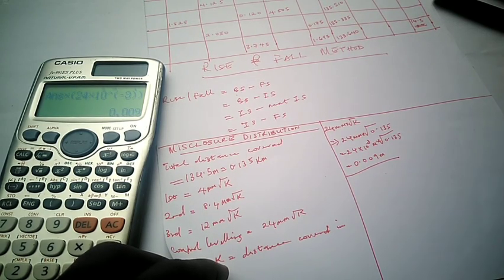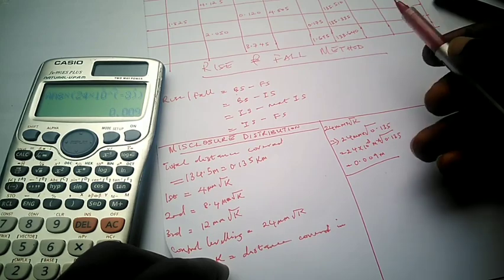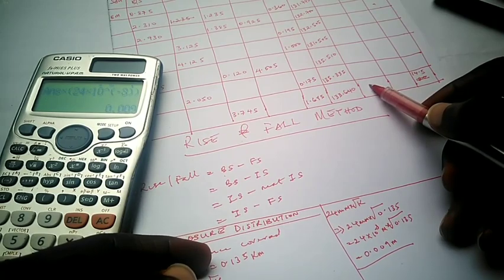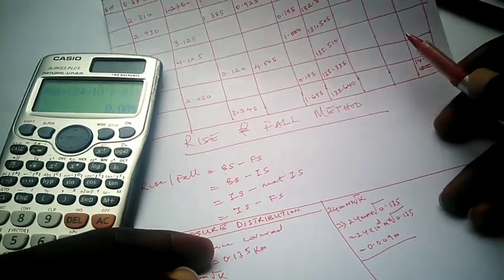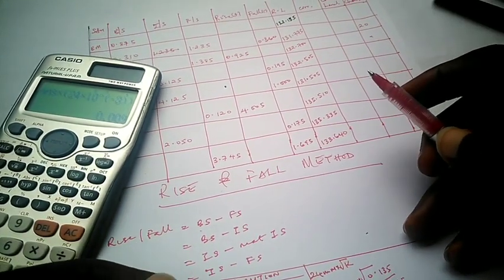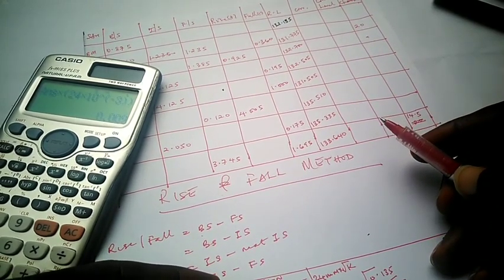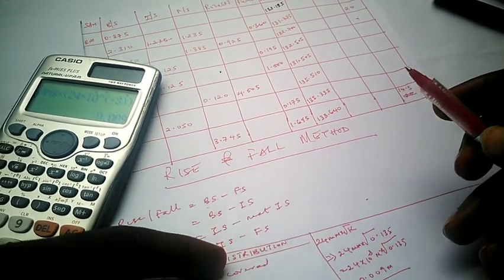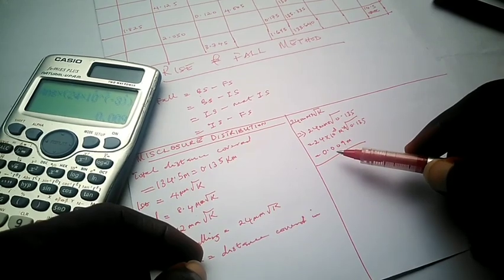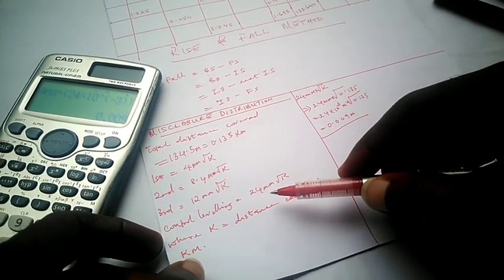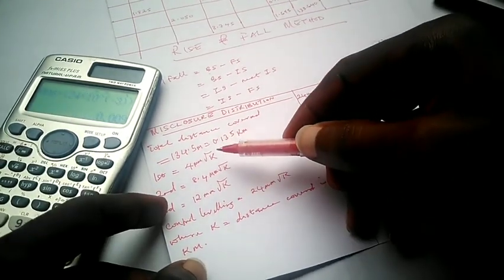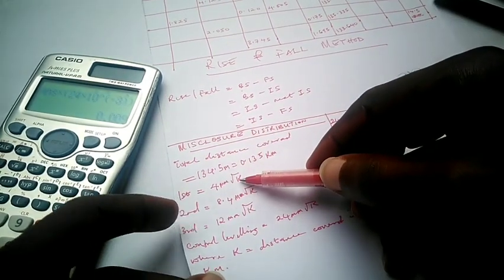Now we will move to the next level — determining the correction for the last point and how to distribute the error to the subsequent stations. I'll see you in the next video. The most important thing here is knowing how to get your reliable misclosure for any particular leveling exercise.